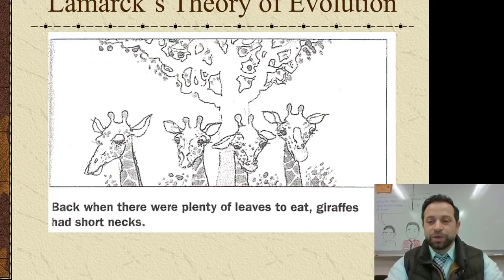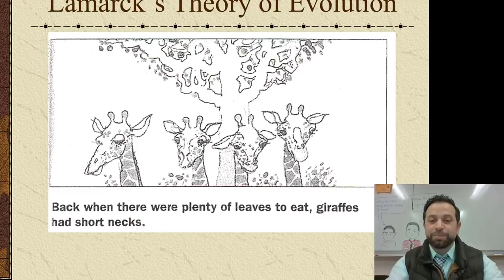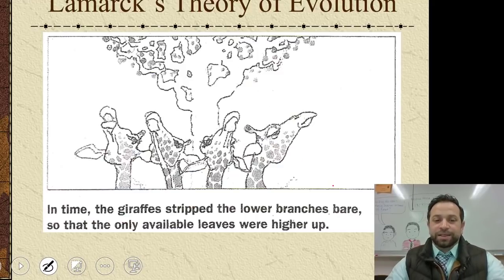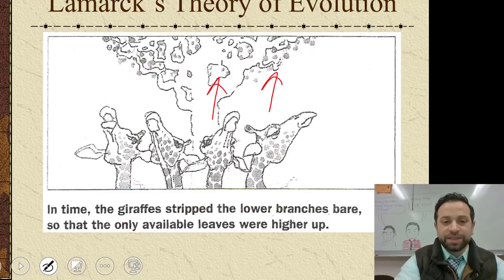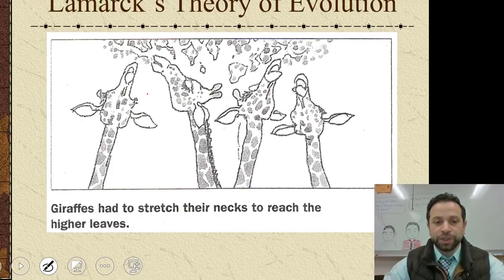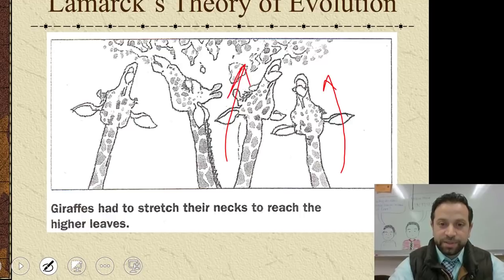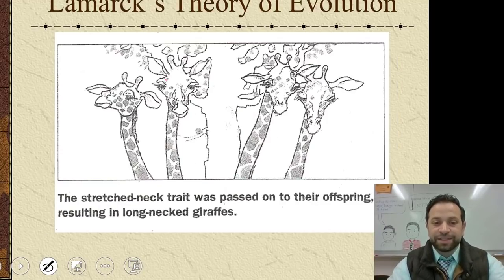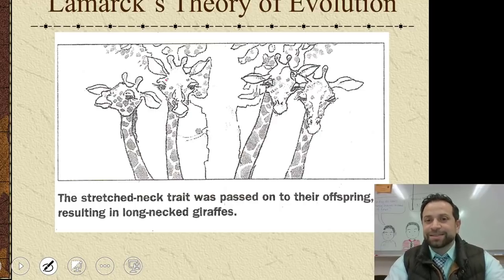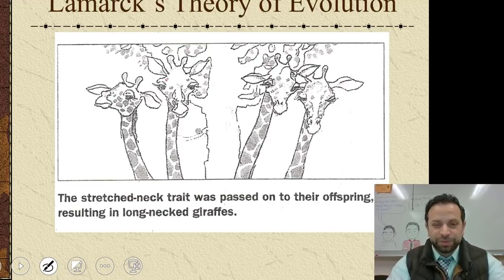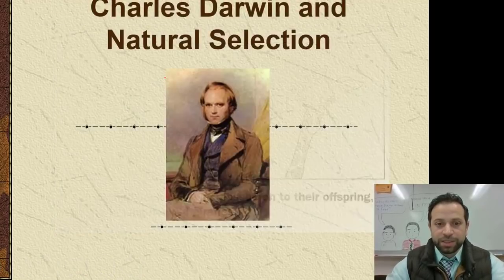Let's talk about a giraffe example. Back when there were plenty of leaves to eat, giraffes had short necks. In time, giraffes stripped the lower branches bare so the only available ones were higher up. They started to stretch their necks to reach those higher leaves. These giraffes' necks were stretched permanently, and they passed this trait onto their offspring, resulting in long-necked giraffes. That's Lamarck's theory of evolution.